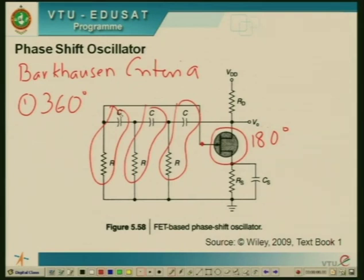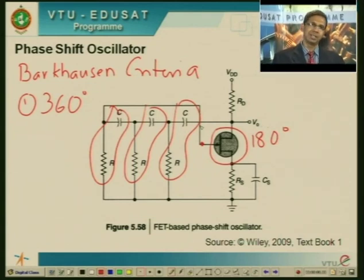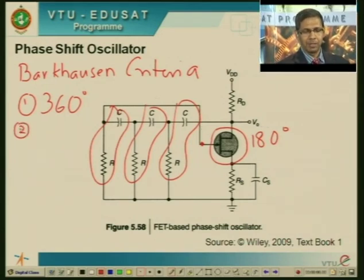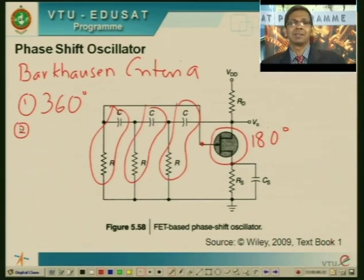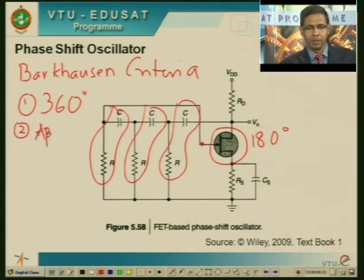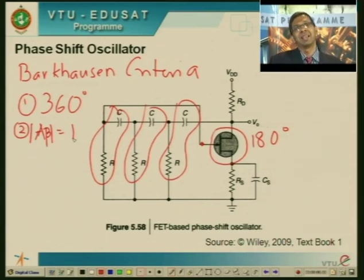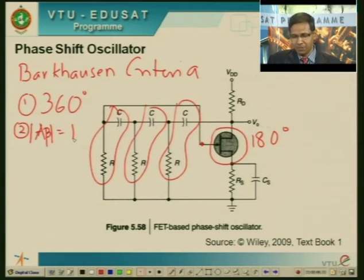The overall phase shift must be 360 degrees: 180 provided by the device and the remaining 180 provided by three sets of RC circuits giving 60, 60, and 60 degree phase shifts. The second Barkhausen criterion is that the loop gain should be unity. Any transistor has a gain A, and the feedback network has a gain factor beta. The magnitude of this loop gain should be unity. If both conditions are satisfied, oscillations will happen and the circuit will behave like an oscillator. This is how you can use a JFET as a phase shift oscillator.